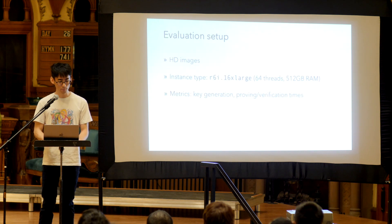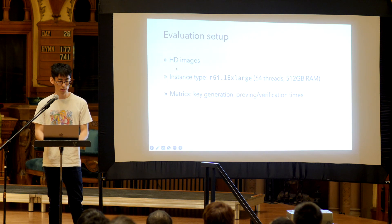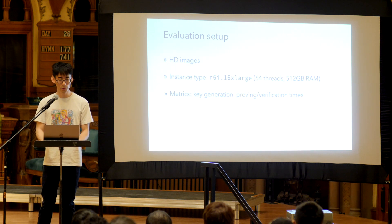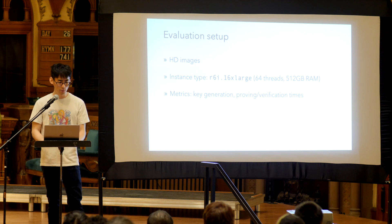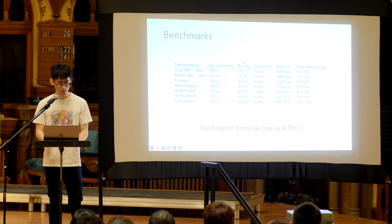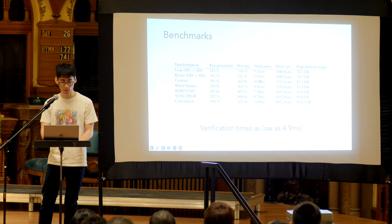Just to give a little background on the evaluation setup: we used ZK Image on HD images, and to the best of our knowledge it's the first time that we can prove image edits privately and securely with HD images. We used the R6i 16x large instance type, which is fairly heavyweight, but the memory overheads can be brought down to be proven on actual consumer devices, for example a Mac Pro. For lightweight image edits such as cropping and resizing, the proving time is around five minutes, and the verification times are as little as six milliseconds.